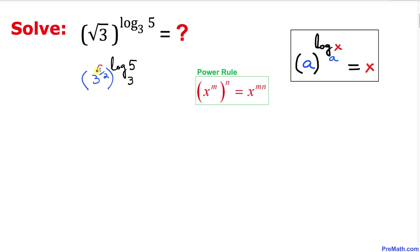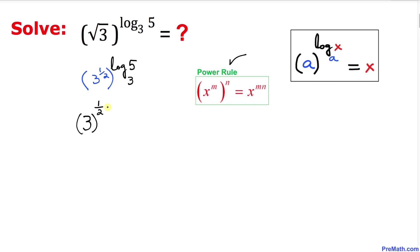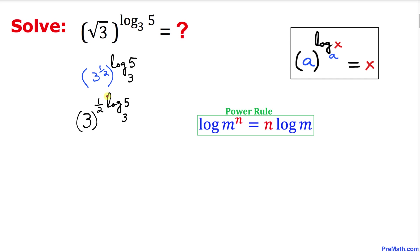We have two exponents: 1/2 and log of 5 with base 3. Applying the power rule, we multiply these exponents, giving 3 to the power of 1/2 times log of 5 with base 3. Focusing on this exponent part, we apply the power rule so the 1/2 becomes an exponent of 5, giving 3 as the base with log of 5 power 1/2 with base 3.